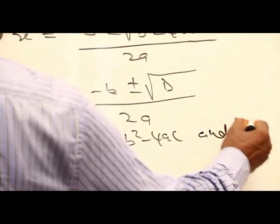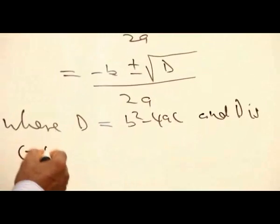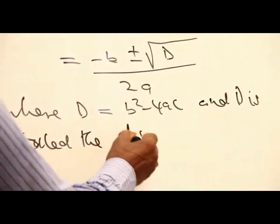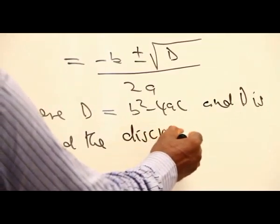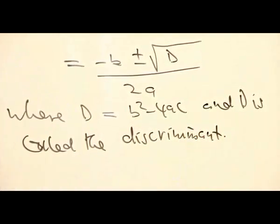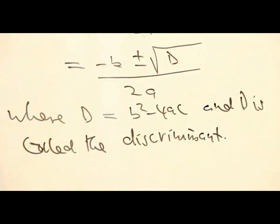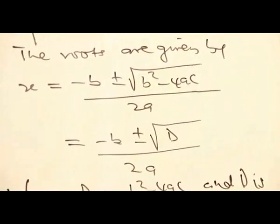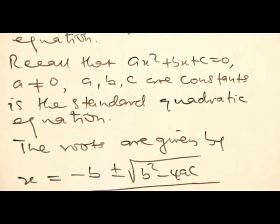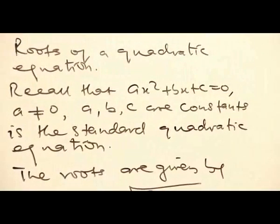And D is called the discriminant. It is discriminant because it tests out the nature of the roots: whether the roots are imaginary, whether they are going to be equal, whether they are going to be real and different.